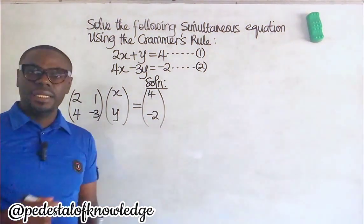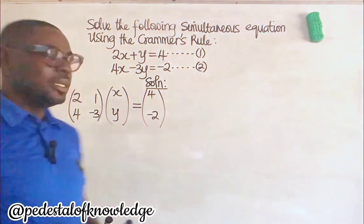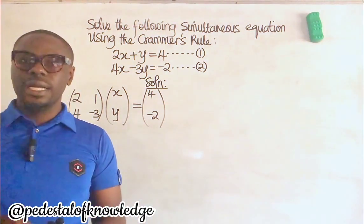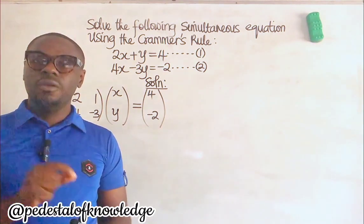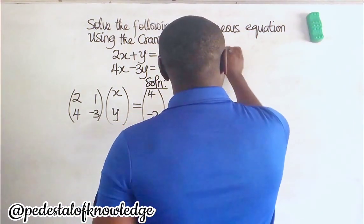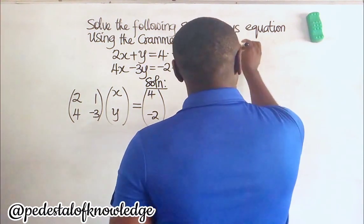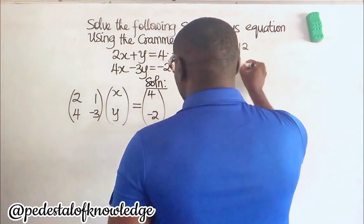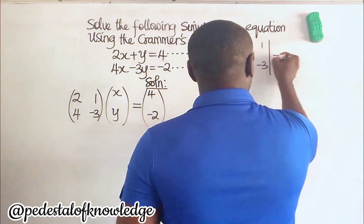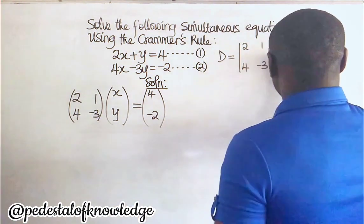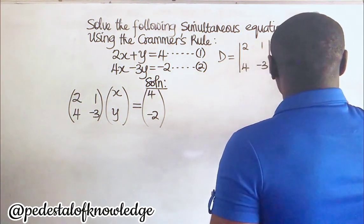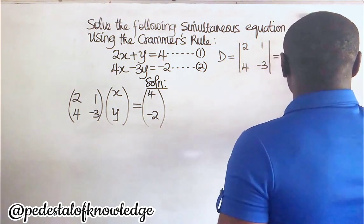So we have to find the determinant of this matrix. Remember that the determinant of a 2 by 2 matrix is obtained by subtracting the product of the elements of the trailing diagonal from the product of the elements of the leading diagonal. The determinant of this matrix — with elements 2, 1, 4, minus 3 — is equal to minus 3 times 2, which gives us minus 6, minus 4 times 1, which gives us 4. So minus 6 minus 4 gives us minus 10.